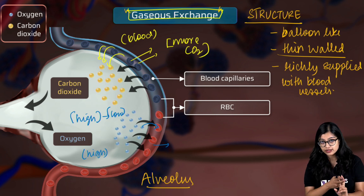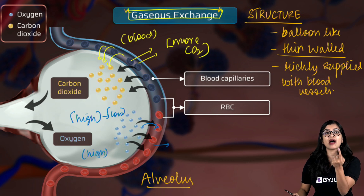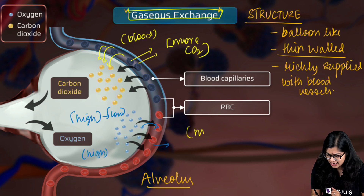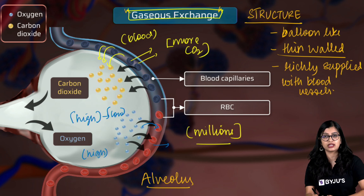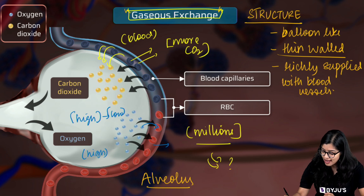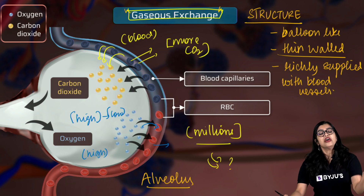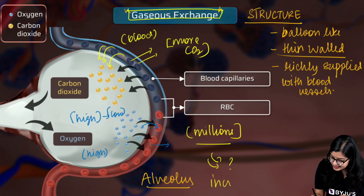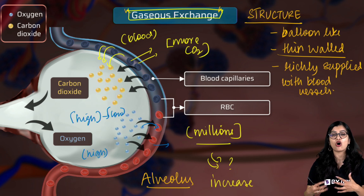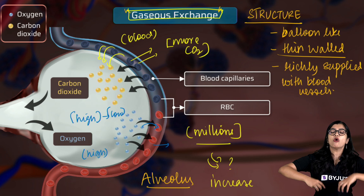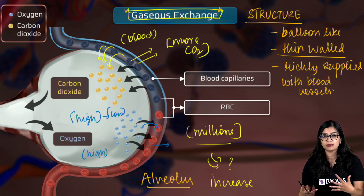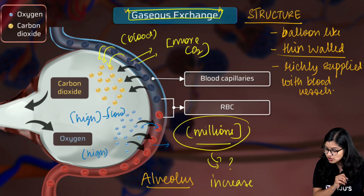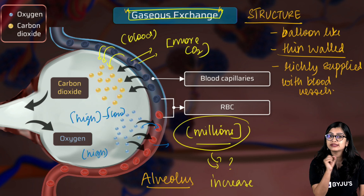In our body we don't have one single large alveolus — we have millions of alveoli within the lungs. The reason for having many alveoli rather than one single large one is to increase the surface area for gaseous exchange, so that more oxygen can enter the blood and be transported efficiently to different parts of the body. That is why we have millions of alveoli and not just one single large alveolus.